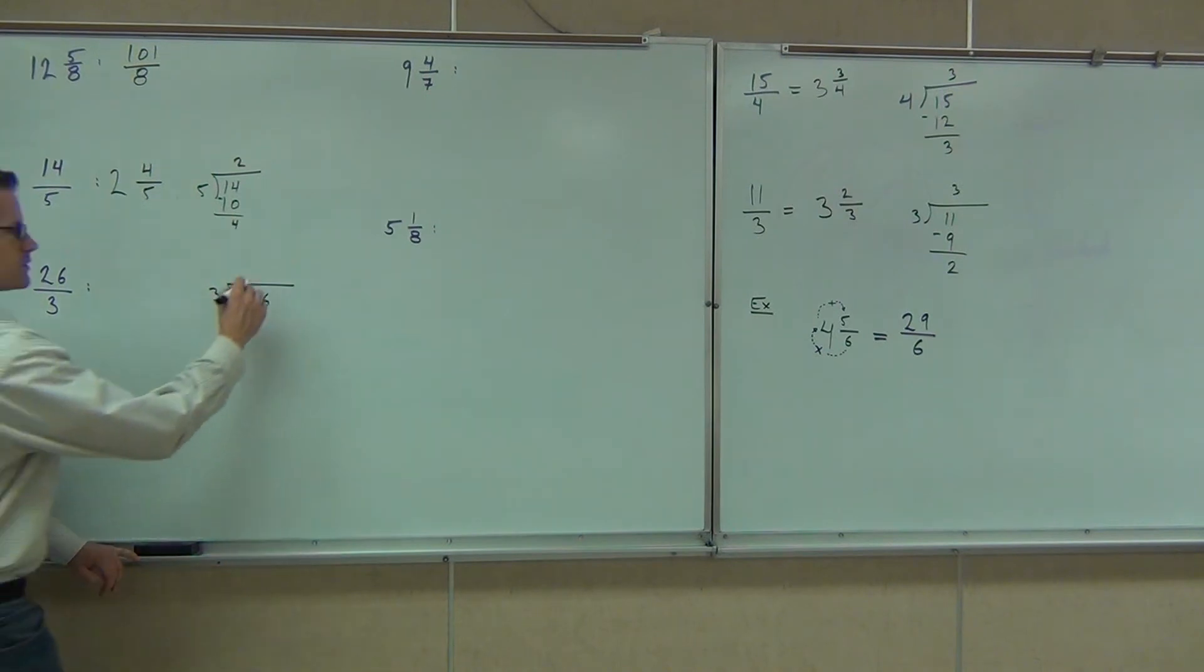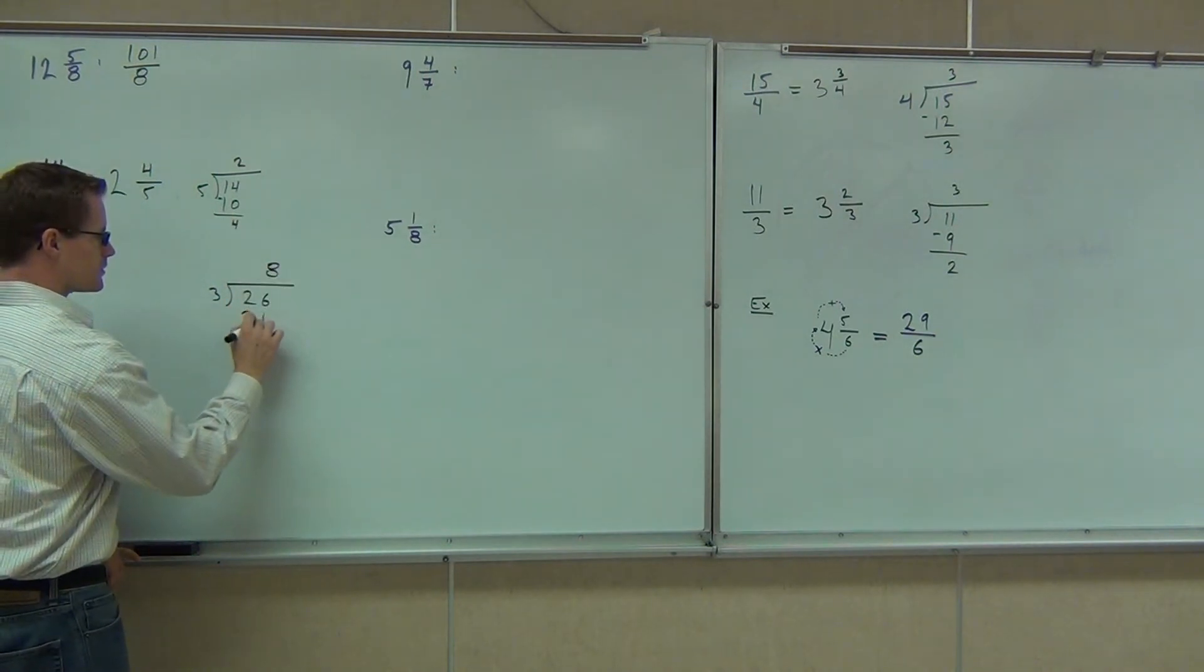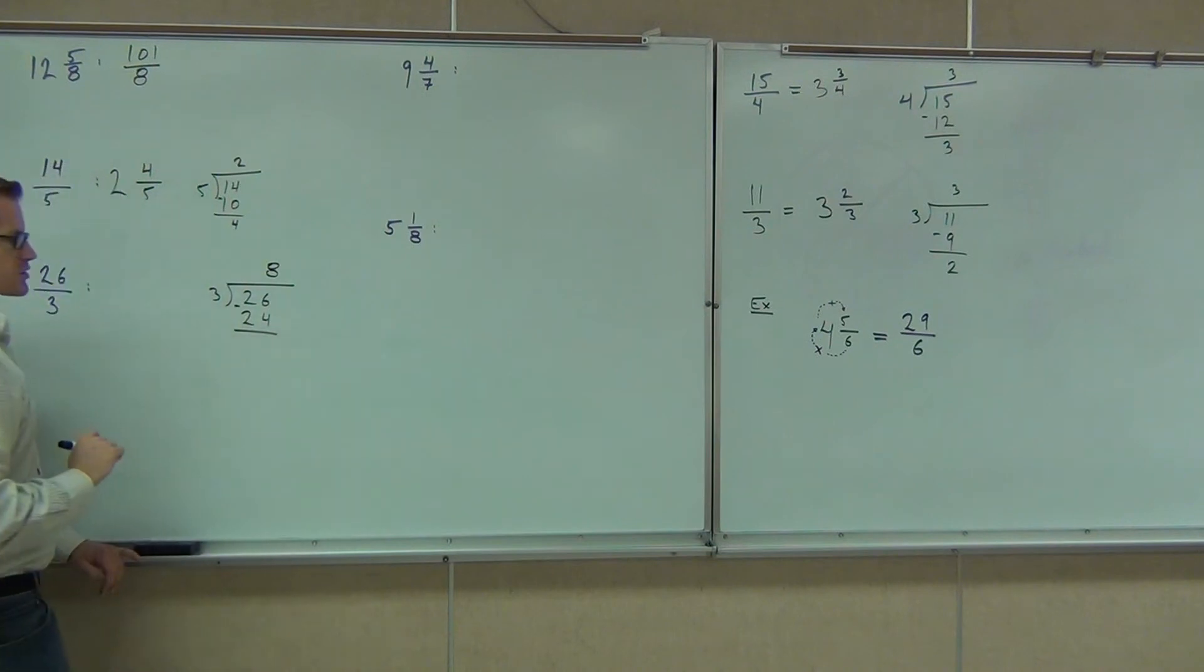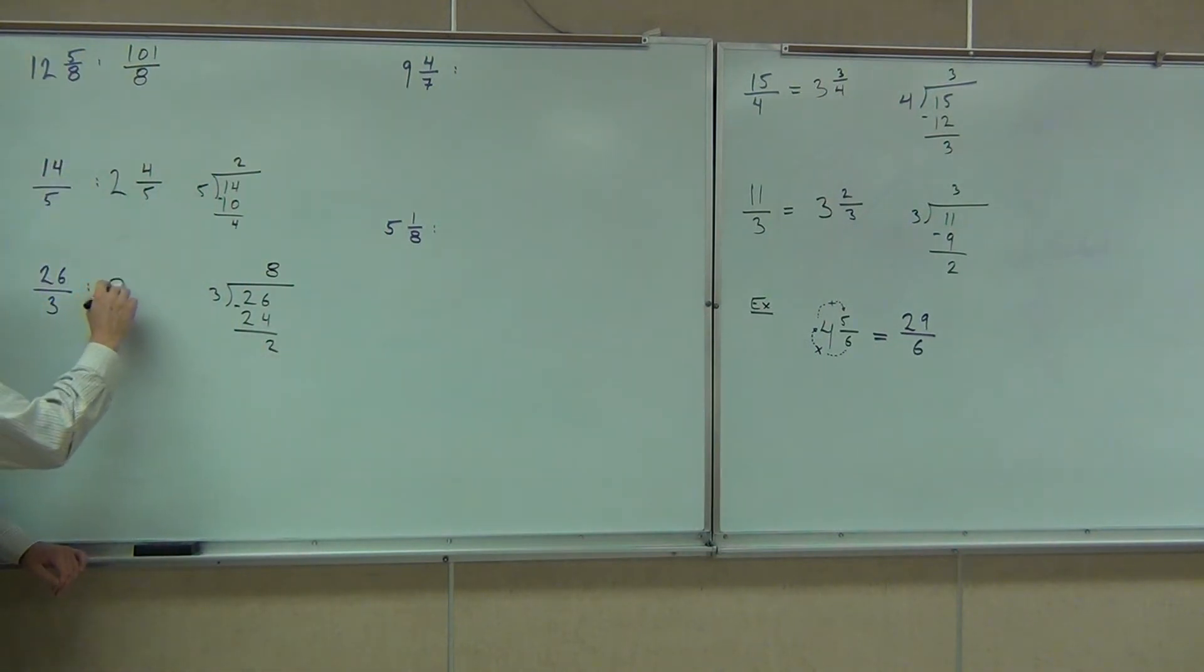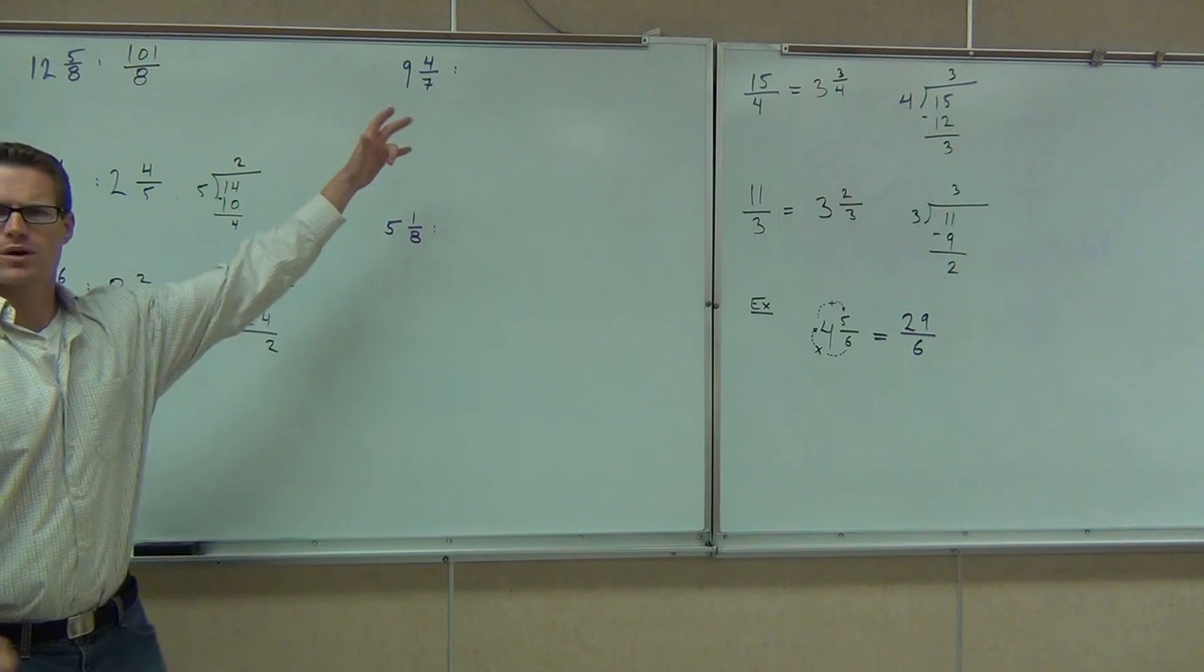Subtract and we get 2, so we'll have 8 and 2 thirds. Last two, we're going from, what are these known as? Mixed numbers.